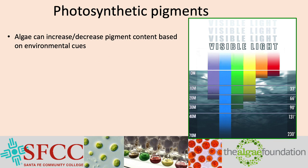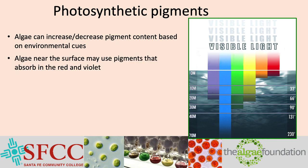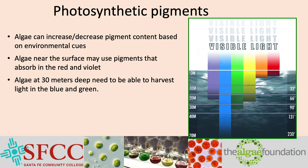Algae can increase or decrease pigment content, or change the relative pigment ratios based upon environmental cues. As shown in the diagram of the water column, red and violet light do not penetrate very deep, while blue and green penetrate much deeper. Algae near the surface may produce pigments that absorb in the red and violet, as well as the other colors, in order to maximize the amount of light energy they absorb. Algae at 30 meters deep need to be able to harvest light in the blue and green PAR, and probably do not even produce pigments that absorb in the red.